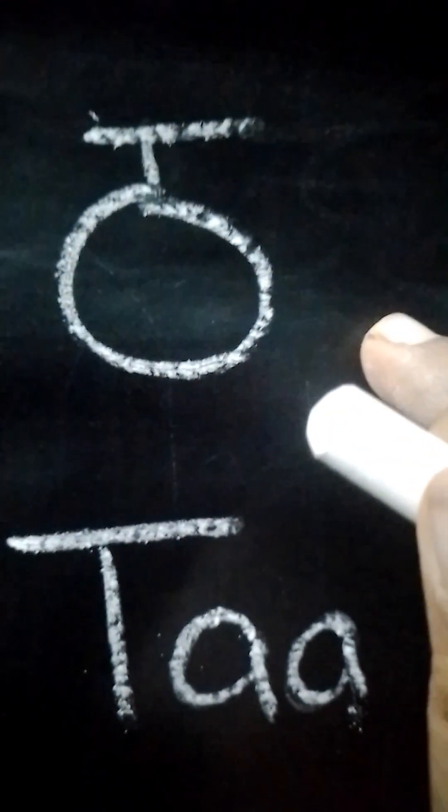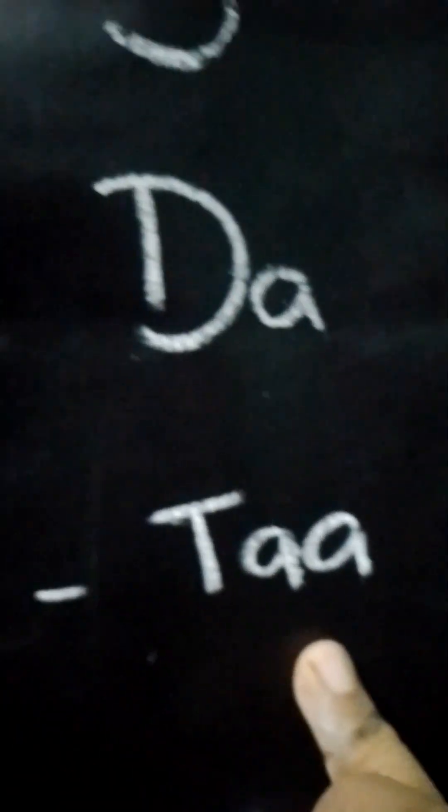Now the second alphabet Tha. So for Tha again the small standing line, and now we are going to draw a circle over here and join it with a sleeping line. This alphabet is called Tha in Hindi.